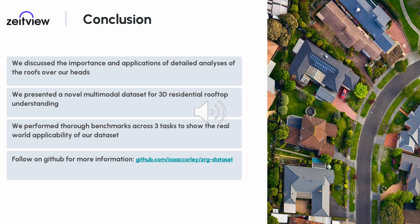In conclusion, we first discussed the importance of the detailed analyses of the roofs over our heads. We then presented our novel ZRG dataset for residential rooftop understanding. Lastly, we experimented with three tasks proving the applicability of our dataset. For more information and updates regarding the dataset, see the following GitHub URL.